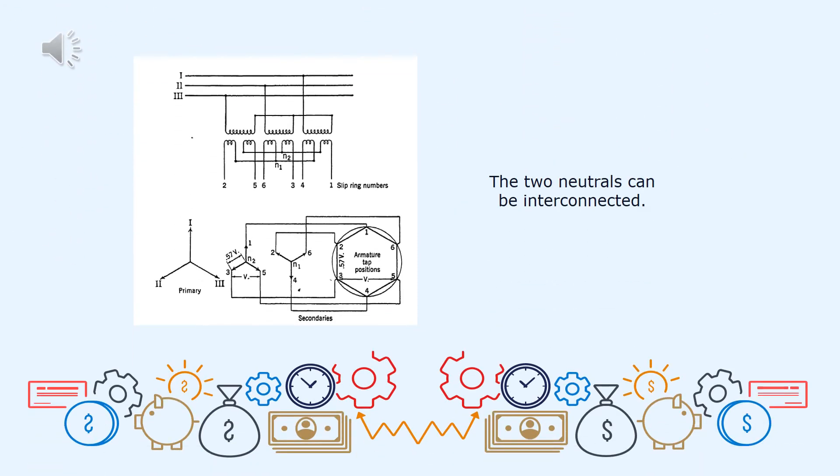In this figure, this is a setup of a complete transformer connection. Bakit pa natin nasabi yung complete connection ito? Because it has two neutrals that can be interconnected to each other. It is a double Y connection, a three-phase to six-phase transformation.